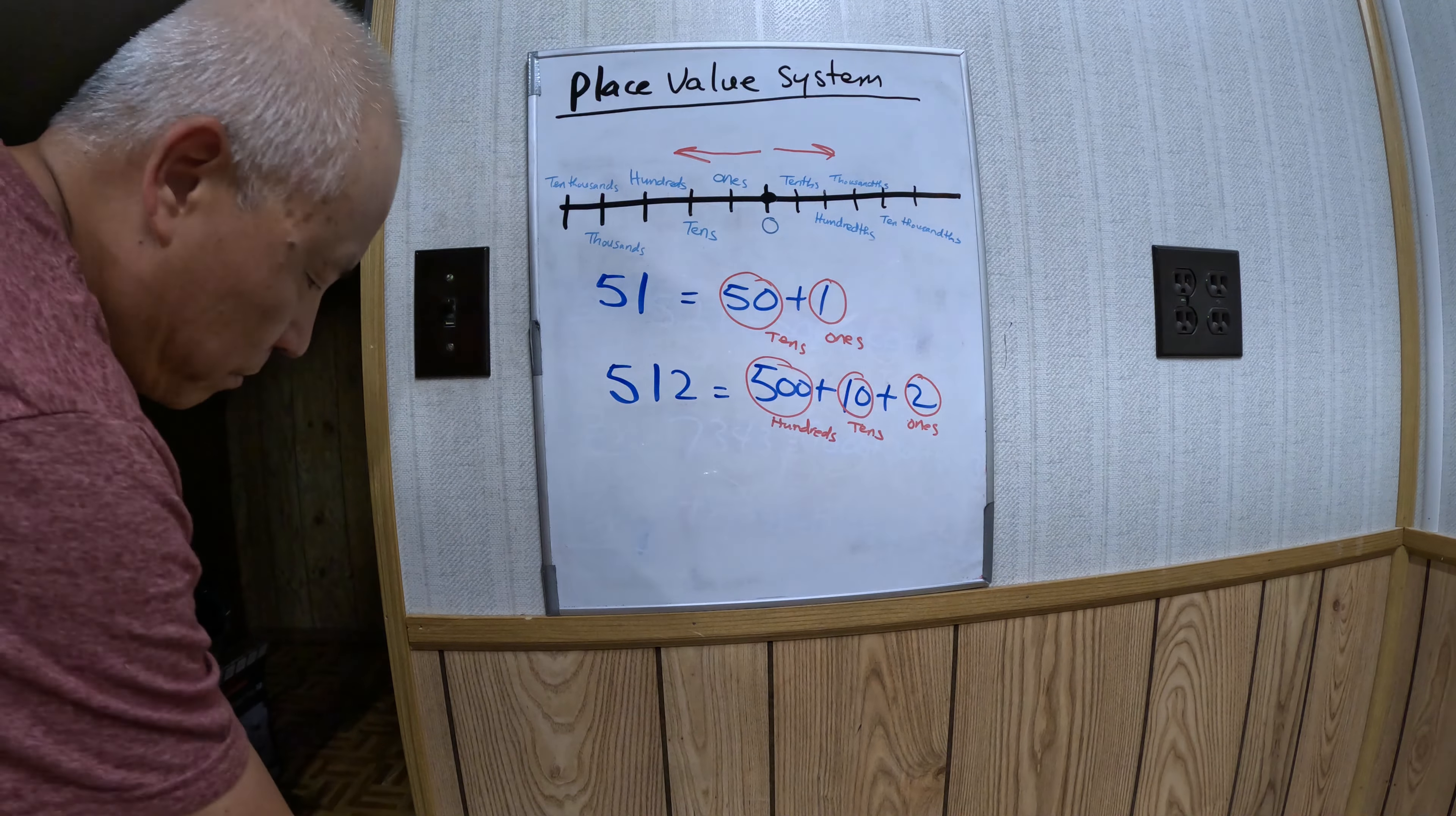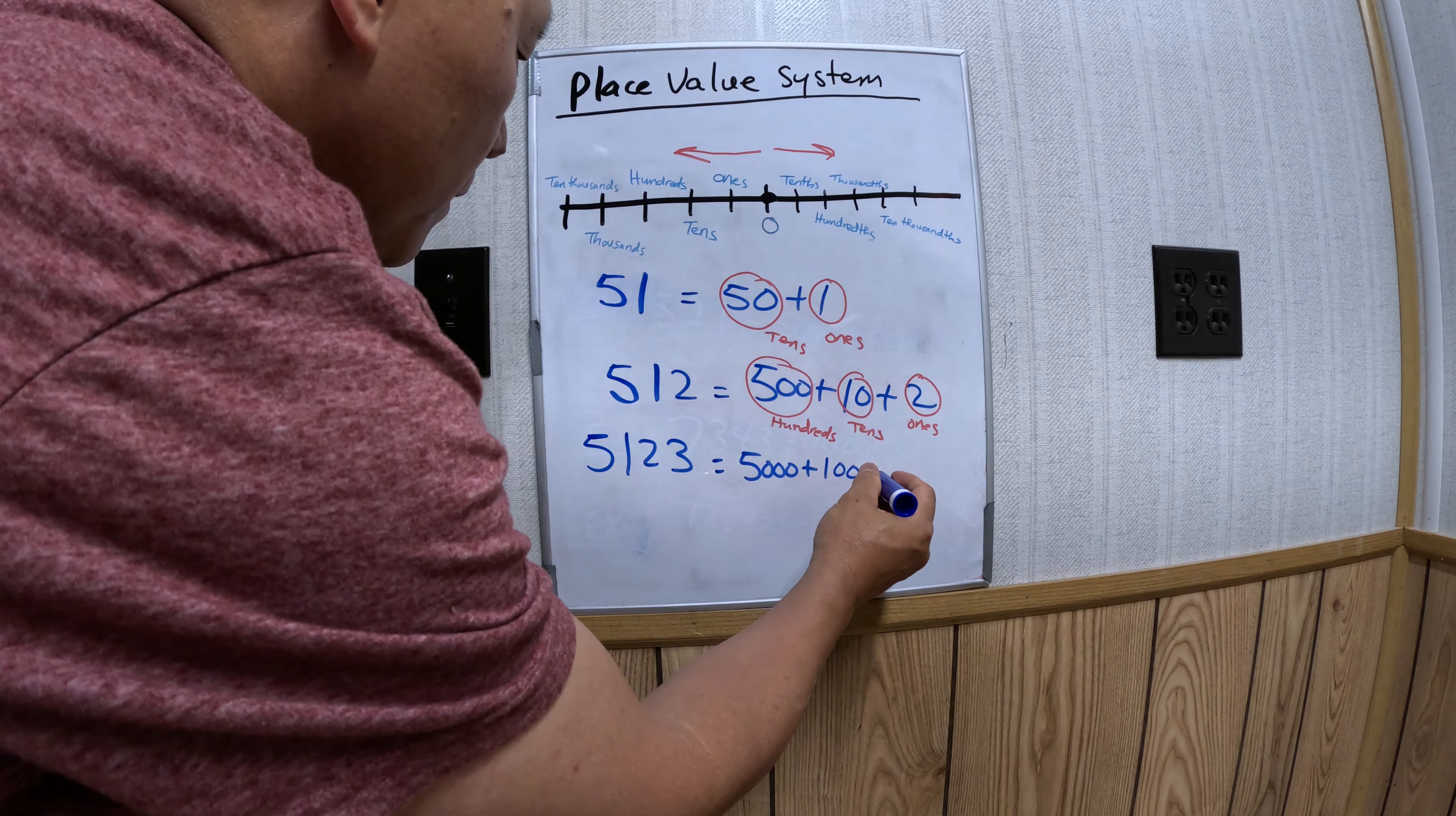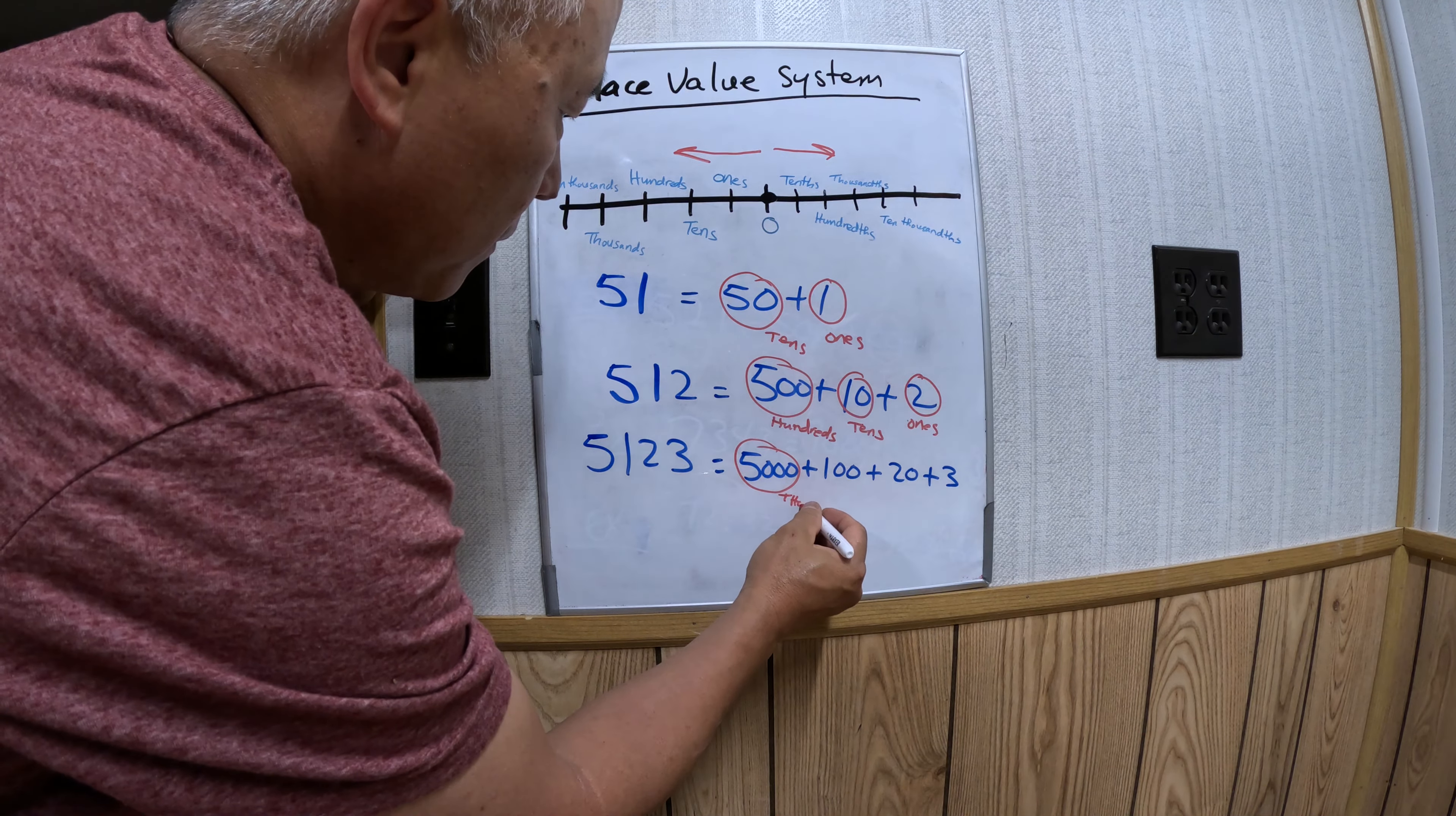...100 plus 20 plus 3. That's all it means. This is the thousands place, hundreds place...